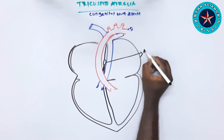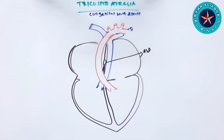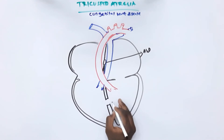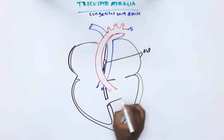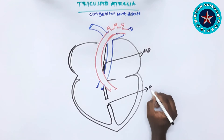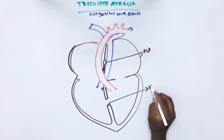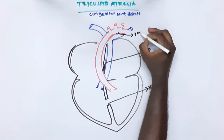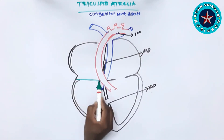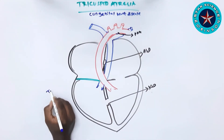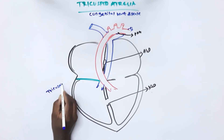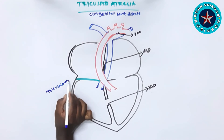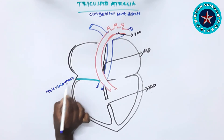With an atrial septal defect, blood passes from the right atrium to the left atrium. From the left atrium, the blood flows into the left ventricle, and from the left ventricle to the right ventricle through the opening of the ventricular septal defect. From there, it enters the pulmonary artery, and from there it reaches the lungs.